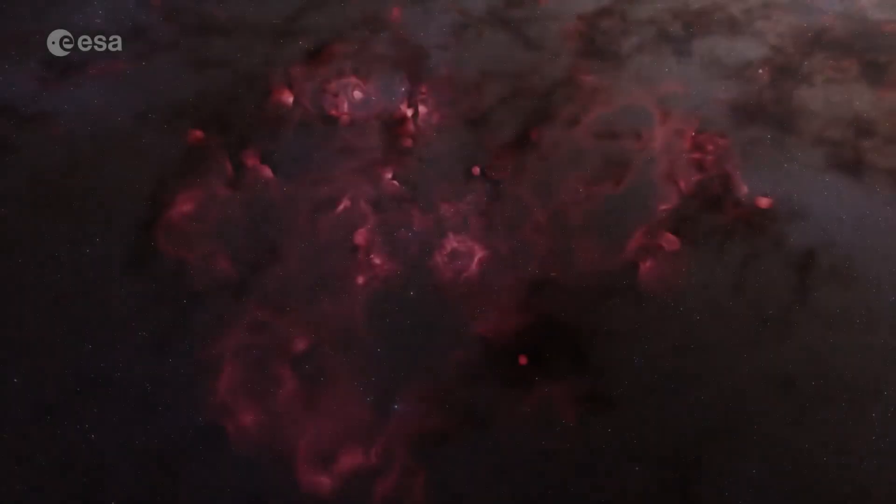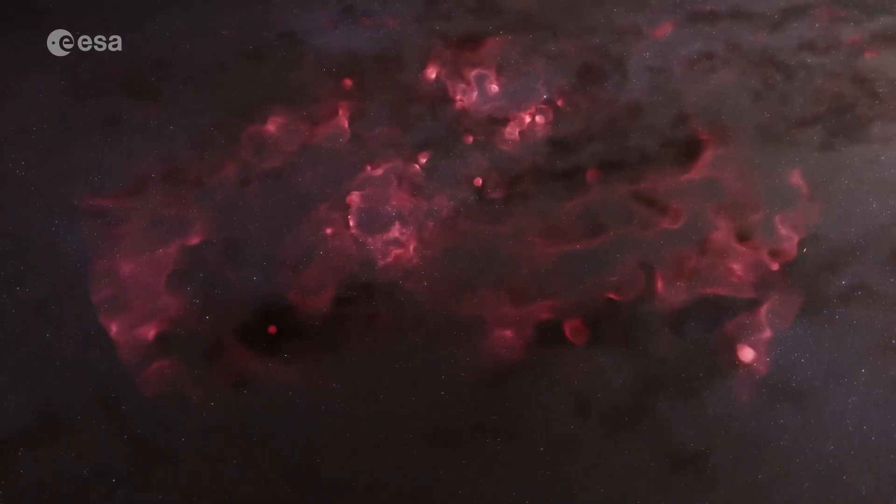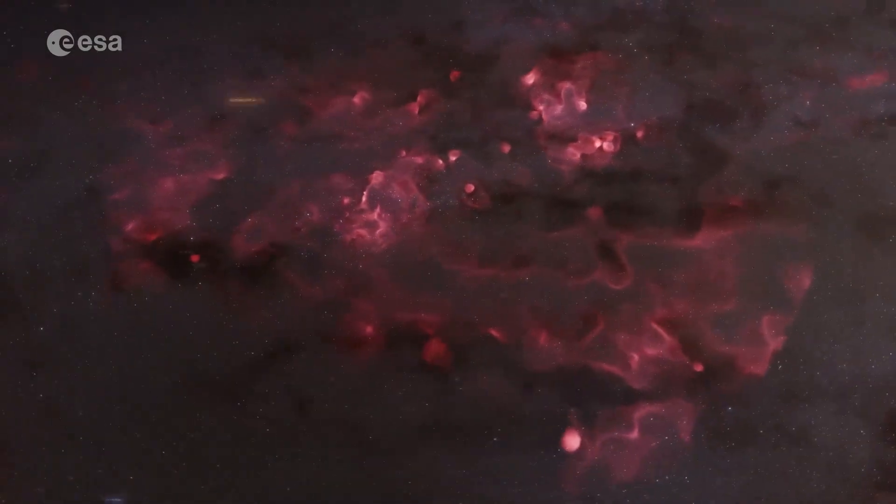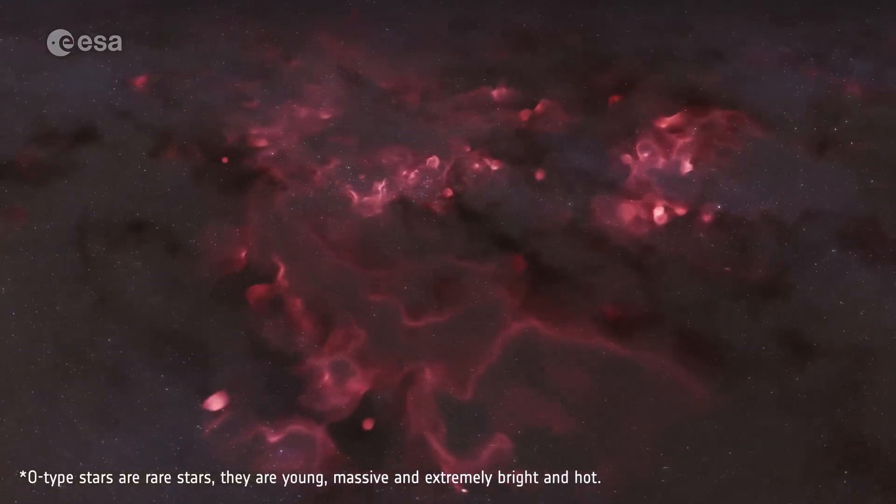This map is based on Gaia's observations of 44 million ordinary stars and 87 O-type stars.